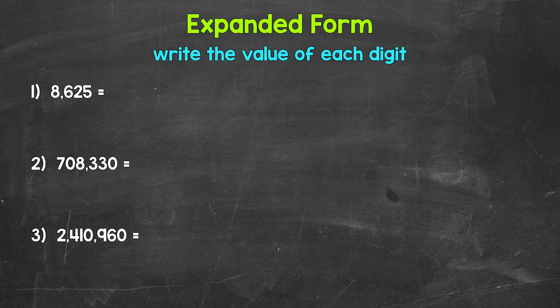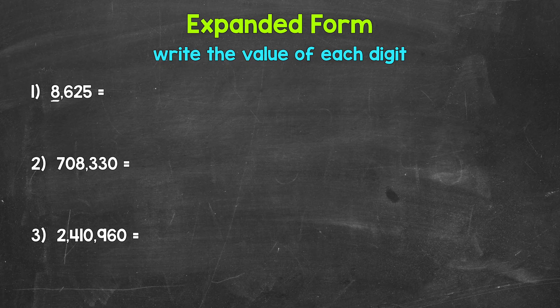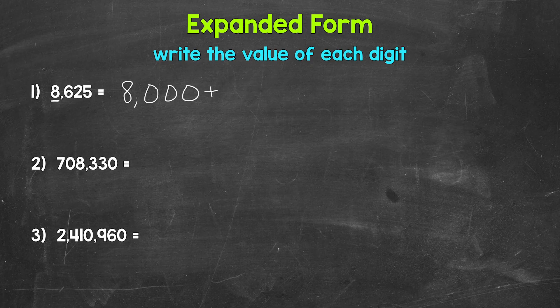Let's jump into our examples, starting with number one, where we have 8,625. To start writing a number in expanded form, we start with the digit furthest to the left and then work our way right. So we start with this eight right here. The eight is in the thousands place, so it has a value of 8,000. We put 8,000 plus — we use addition in between because we want the sum of all of the values. We're adding the values of each digit, and the sum of all the values will equal the original number.